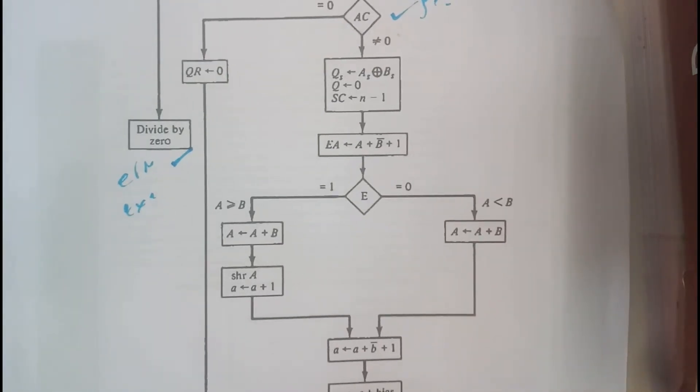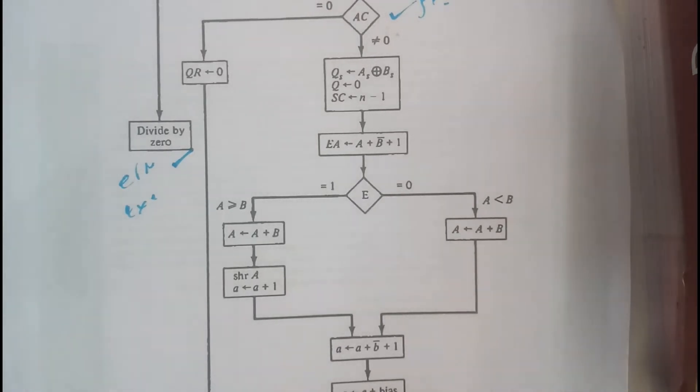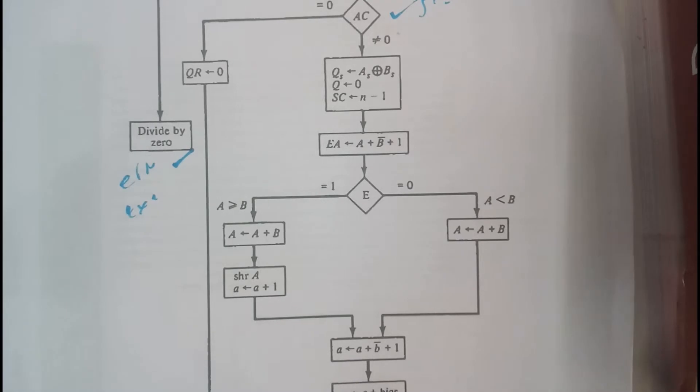We will also make Q to zero. We successfully made it. And we will be decrementing the SC value one by one. SC value will be initialized by the number of bits.